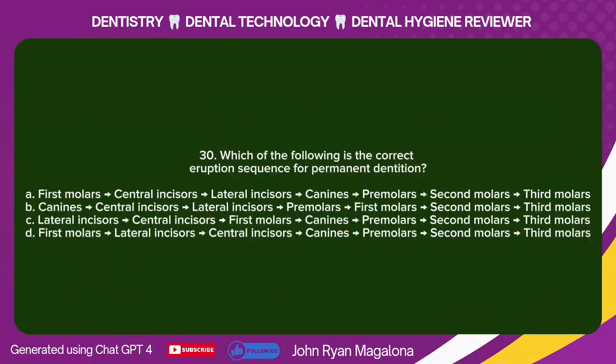Question 30: Which of the following is the correct eruption sequence for permanent dentition? A. First molars, central incisors, lateral incisors, canines, premolars, second molars, third molars. B. Canines, central incisors, lateral incisors, premolars, first molars, second molars, third molars. C. Lateral incisors, central incisors, first molars, canines, premolars, second molars, third molars. D. First molars, lateral incisors, central incisors, canines, premolars, second molars, third molars. Answer: A. First molars, central incisors, lateral incisors, canines, premolars, second molars, third molars.